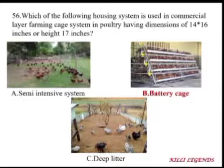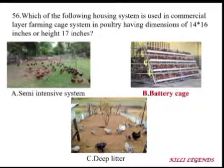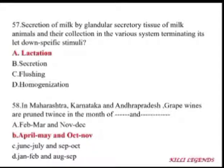The cage system is used in commercial layer farming. The battery cage system has dimensions of 14×16 inches or a height of 17 inches. Lactation is the secretion of milk by glandular secretory tissues of milk animals and its collection in the cistern system, terminated by let-down of specific stimuli.